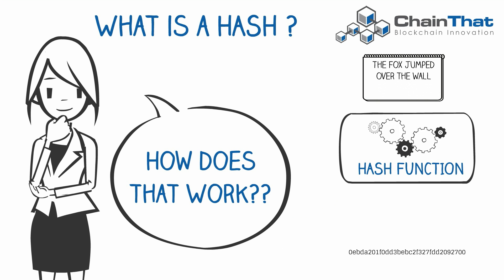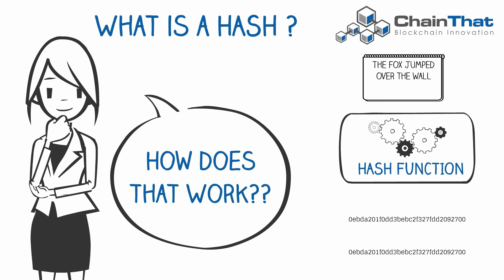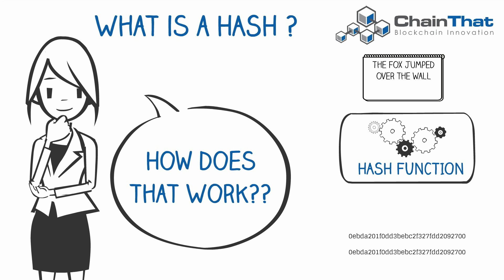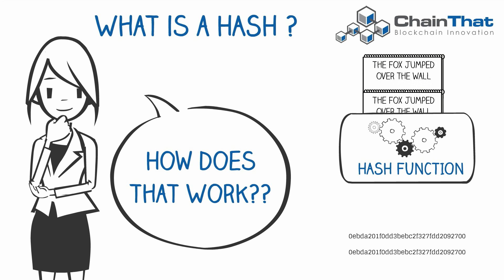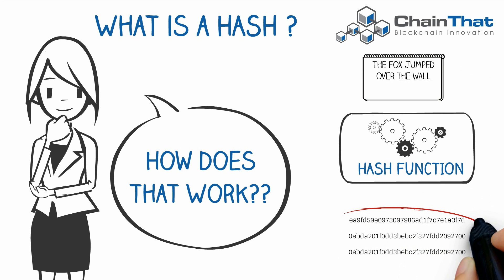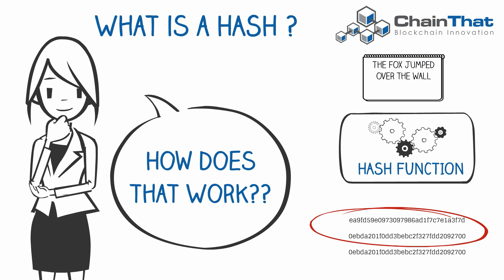Every time the same digital media is put through the hash function it produces the exact same digital output, or hash. When even just a single bit of data in the digital media is changed and then put through the hash function, the digital output — the hash — is completely different to the original one.